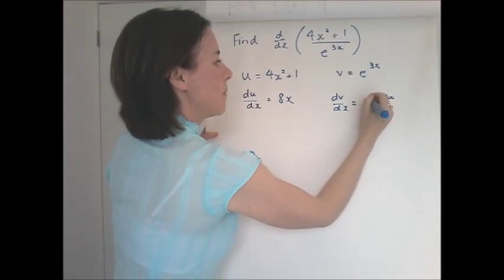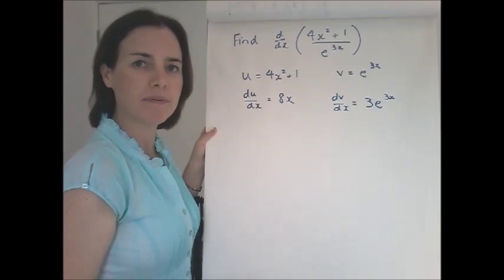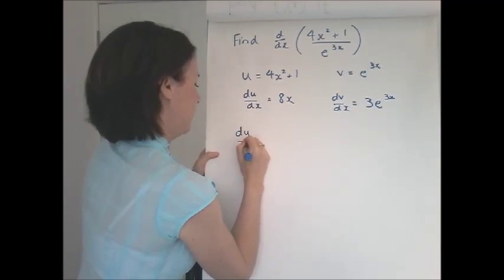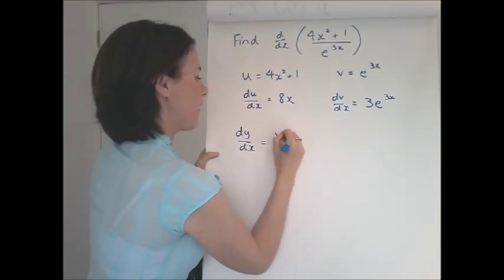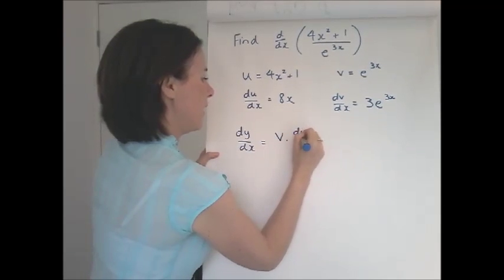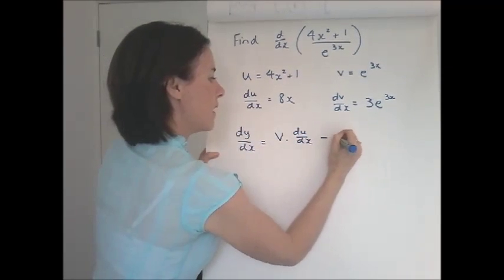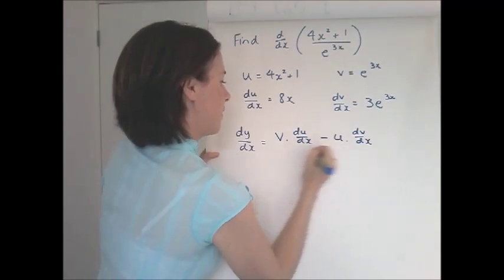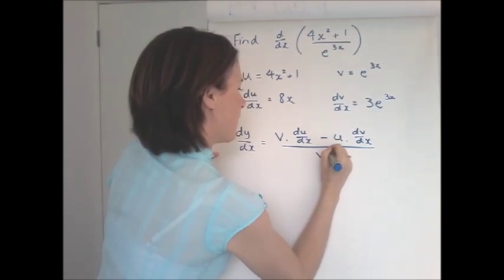Now the quotient rule is v times du/dx minus u times dv/dx, and it's all over v squared.